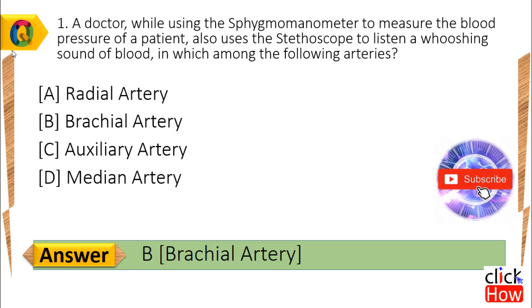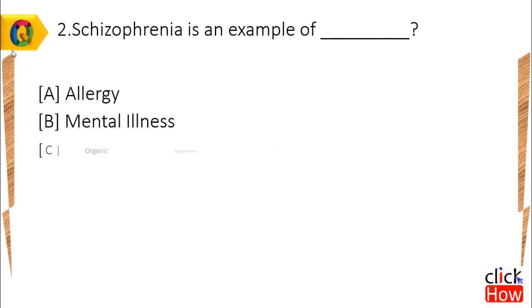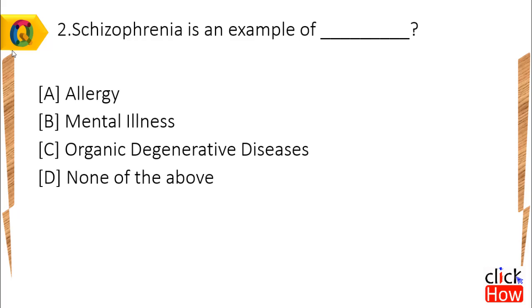Answer is B, Brachial artery. Question 2: Schizophrenia is an example of: A) Allergy, B) Mental Illness, C) Organic Degenerative Disease, D) None of the above.